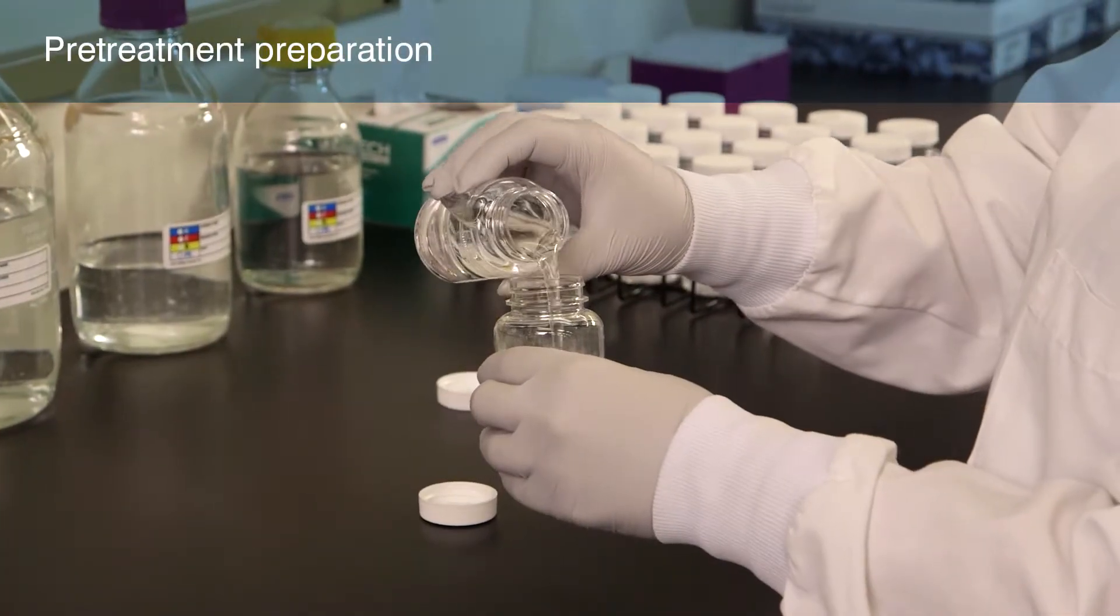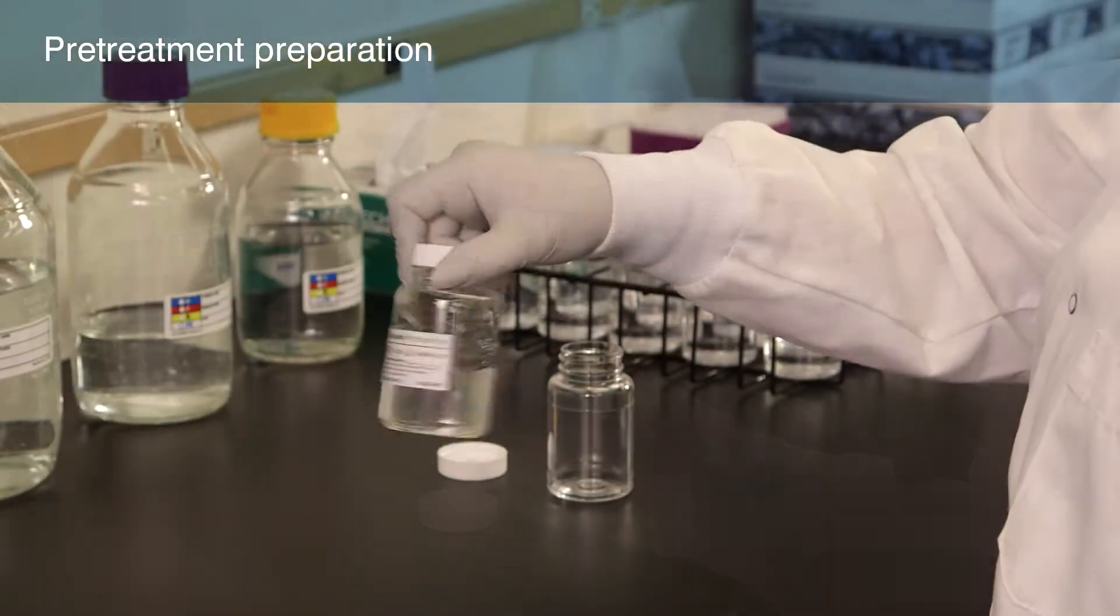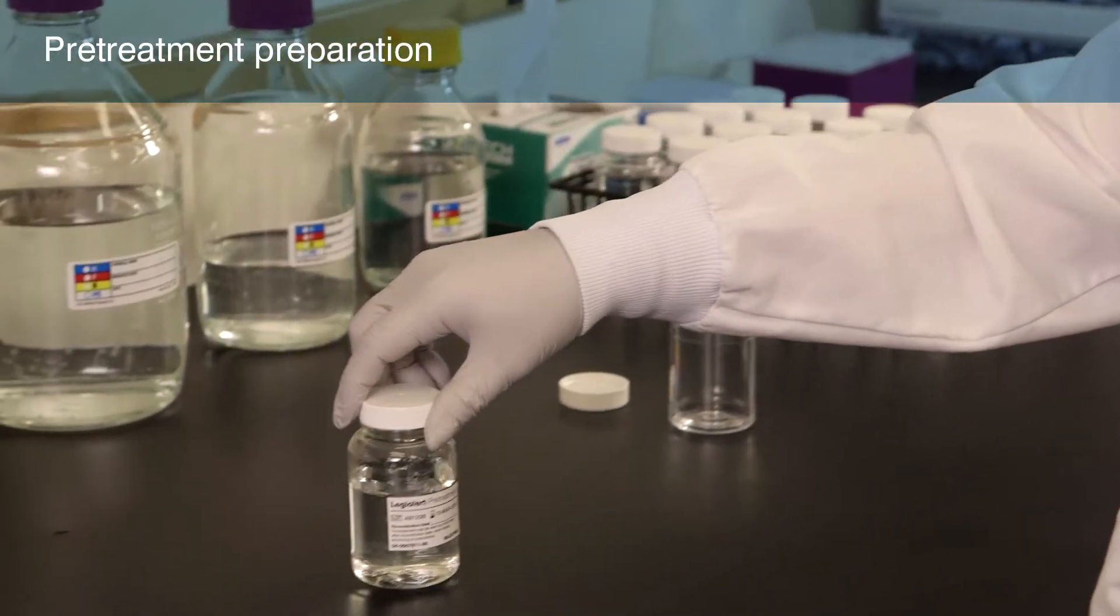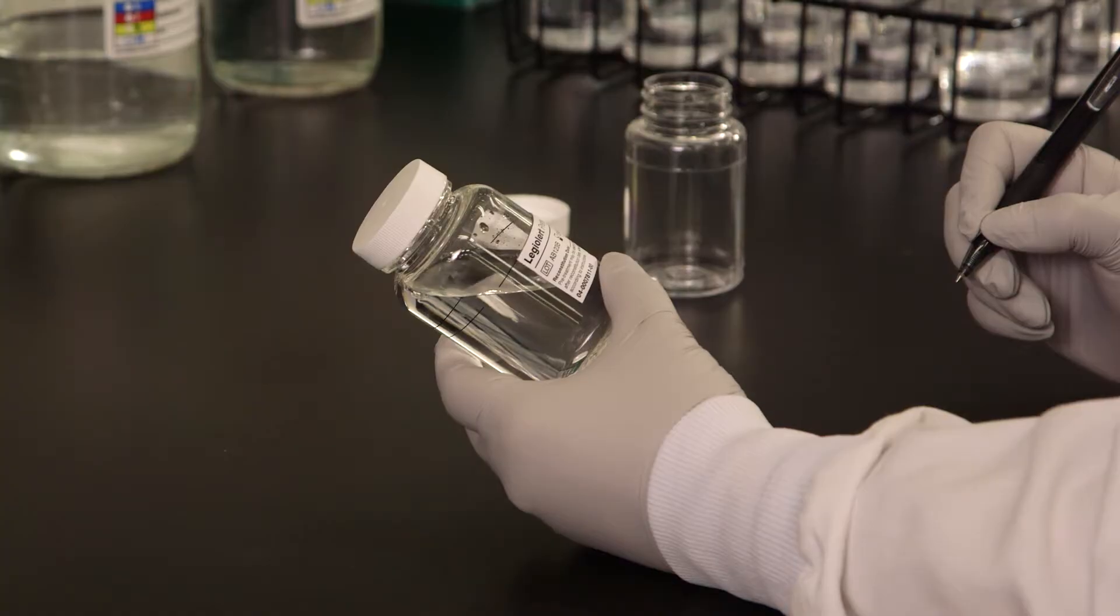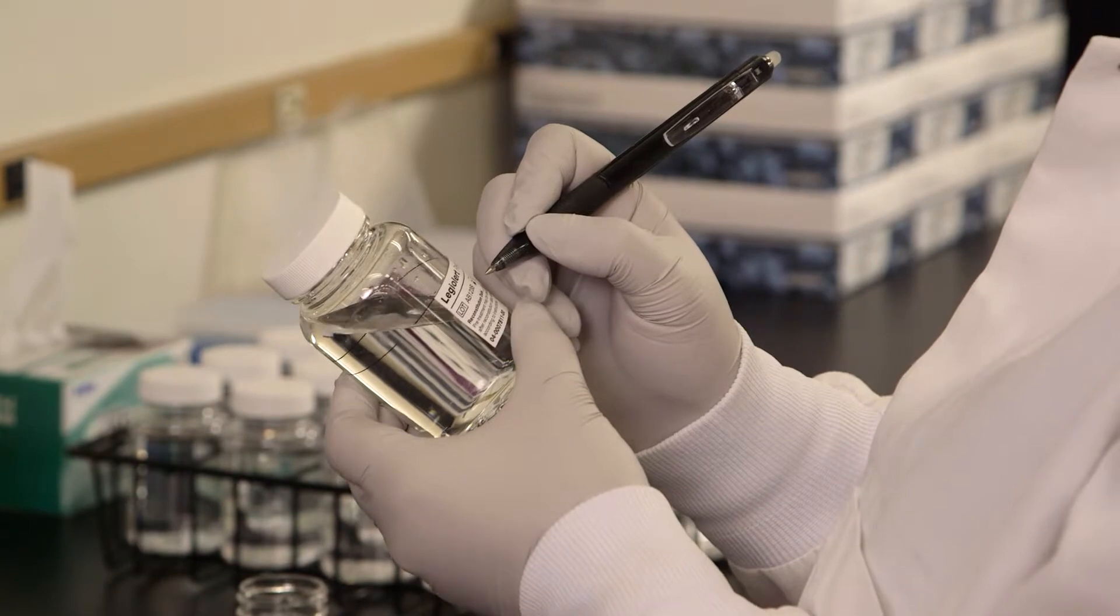Reconstitute the LEG-ALERT pre-treatment by adding 100 mL of sterile DI water to the vessel and then shake until fully dissolved. Mark the preparation date on the bottle. Refer to the LEG-ALERT pre-treatment product insert for more information.